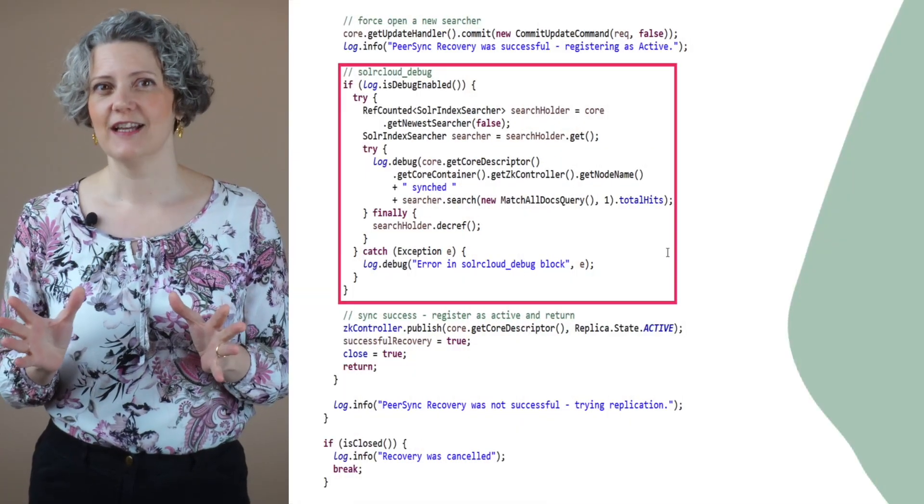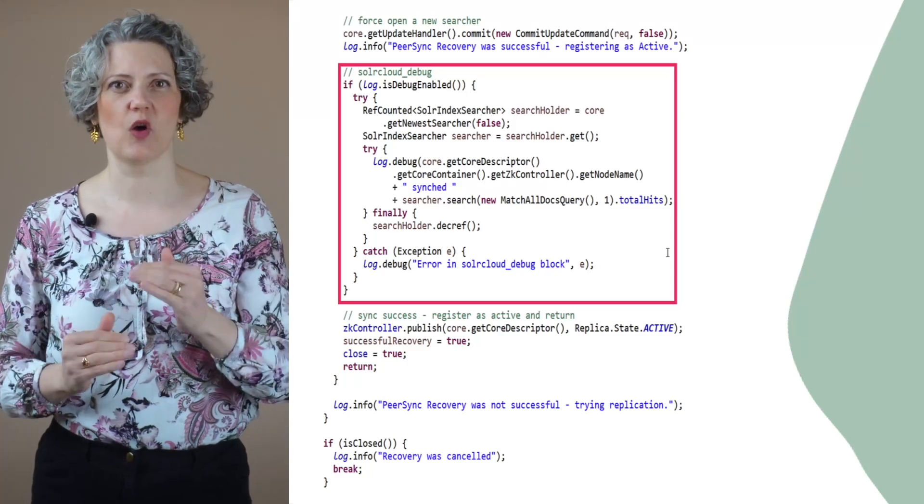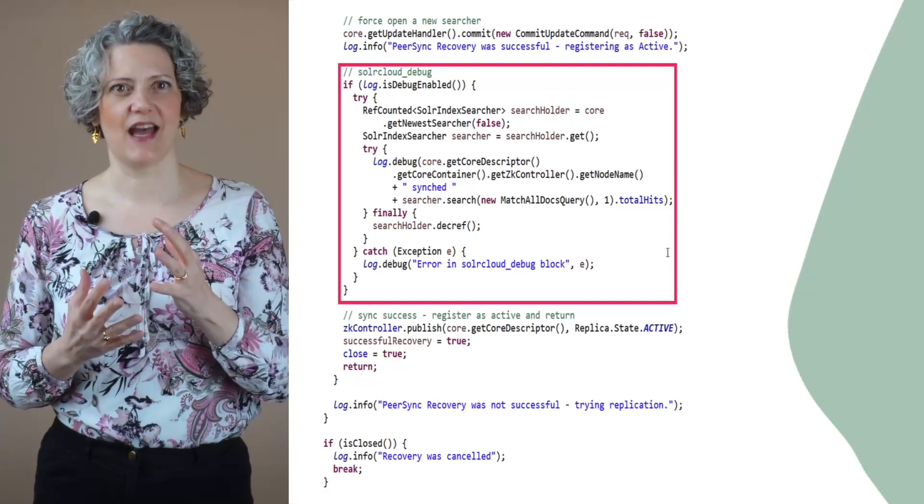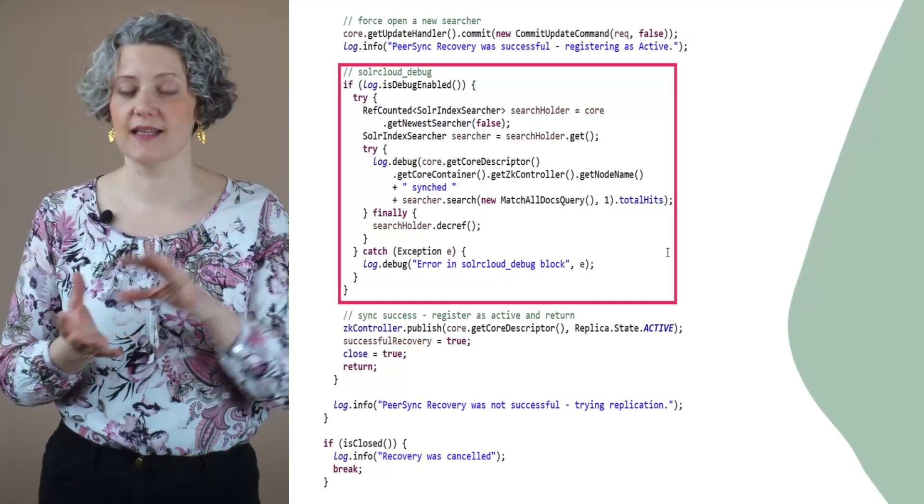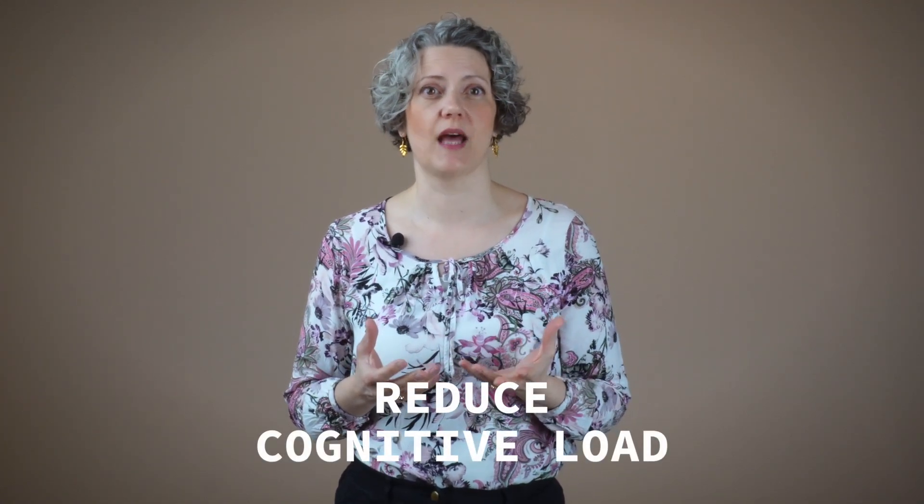A code paragraph is a section of code within a long method that hangs together and might make sense to extract as a method. If you can do that and turn it into a method with a good name, you can significantly reduce the cognitive load for reading that piece of code. You'll make the long method shorter, probably less nested, and that will free up some of your working memory and make it easier for you to read the code. It can be a huge win.